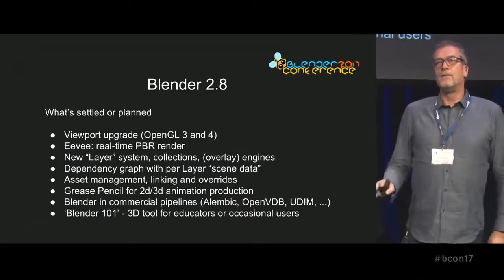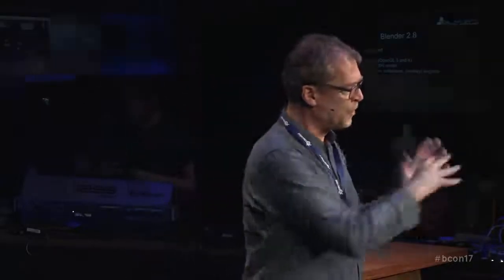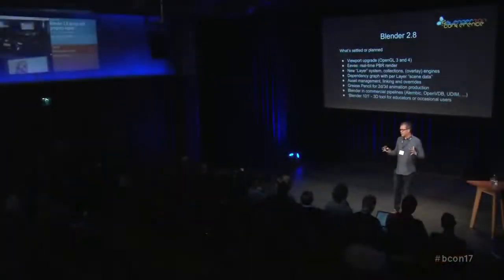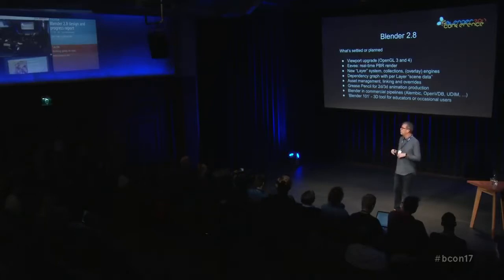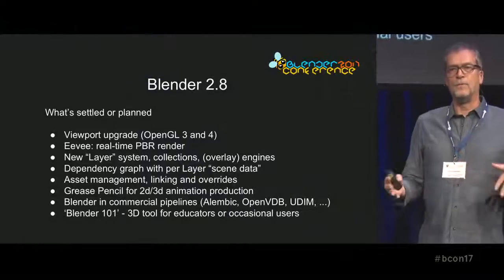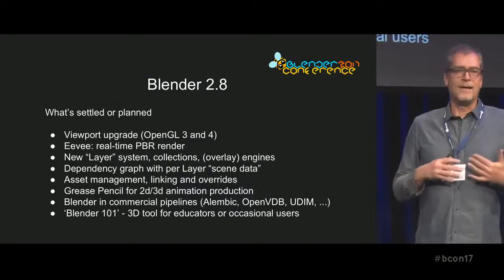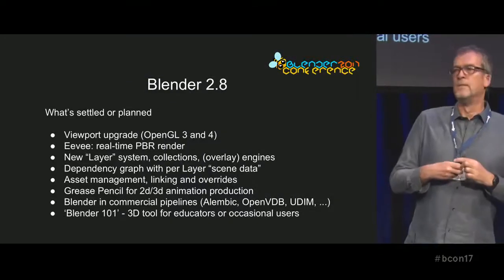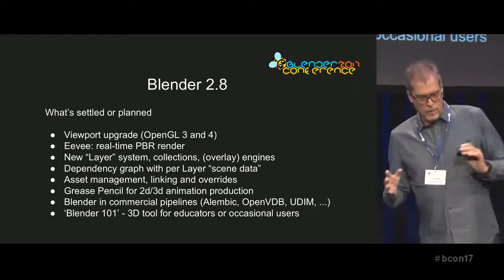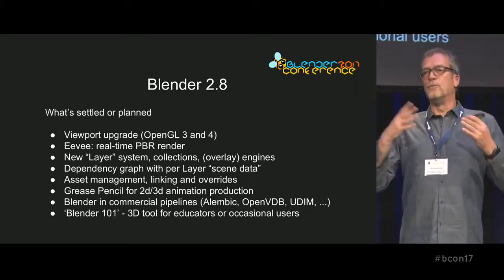In yesterday's slides I mentioned a whole lot of topics — that's all part of the 2.8 project. We take a break of one or two years in our release cycle. At 2.79 it was more like an update of all the projects that were going, but we have a two-year break to work on all the big things that we otherwise can never do or find time for. And that is 2.8.